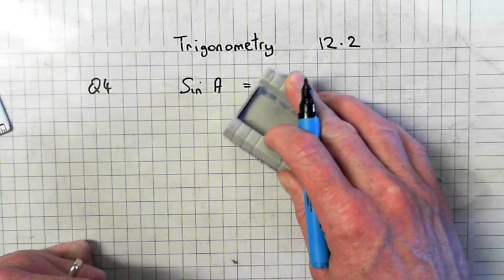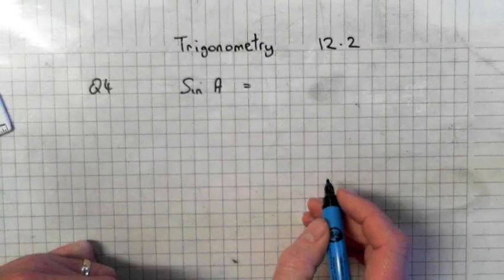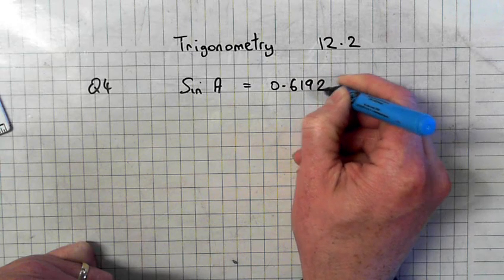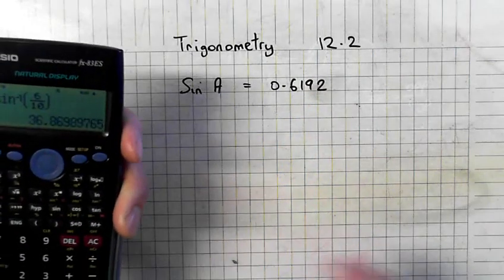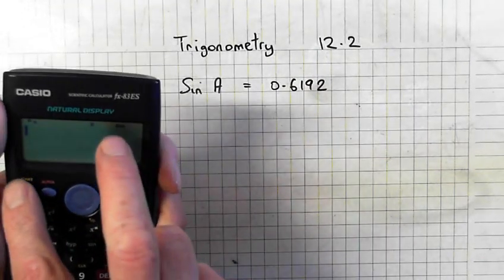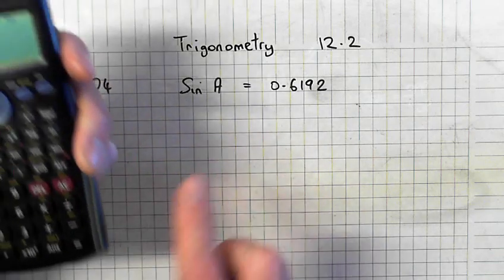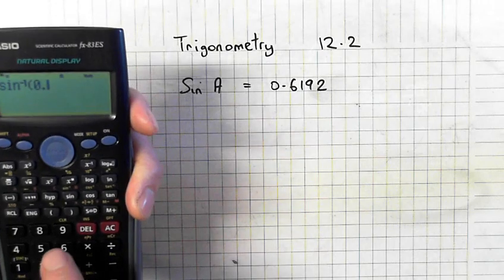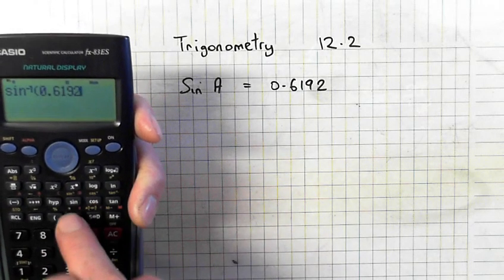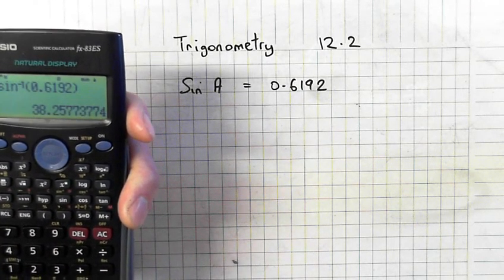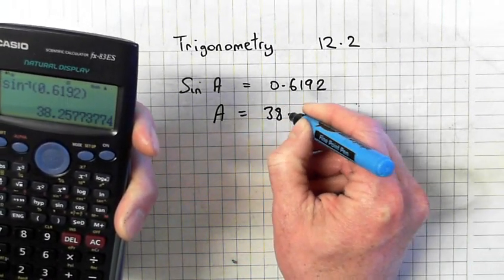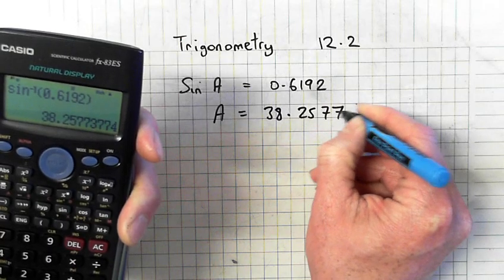But in this example, you're not given a fraction, 6 over 10, you're given a decimal: 0.6192. So you do pretty much the same thing. You go second function, sine, and key in the decimal 0.6192, close the brackets, and the answer is A is equal to 38.2577 degrees.